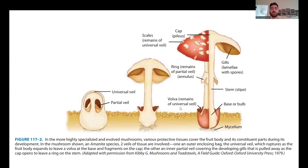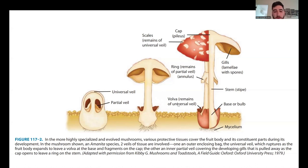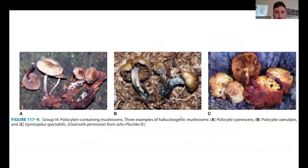First, let's look at the structure of a mushroom. You can see all the way on the left there's the partial veil and universal veil. Eventually, the universal veil grows upwards and becomes the cap with scales or remnants of the universal veil, and the bottom part remains at the bottom of the mushroom and becomes the vulva. Here are some pictures of psychoactive mushrooms with psilocybin. From Goldfrank's textbook, you can see there's a blue tint to some of the damaged portions of the mushrooms, which is typical for mushrooms that contain psilocybin.